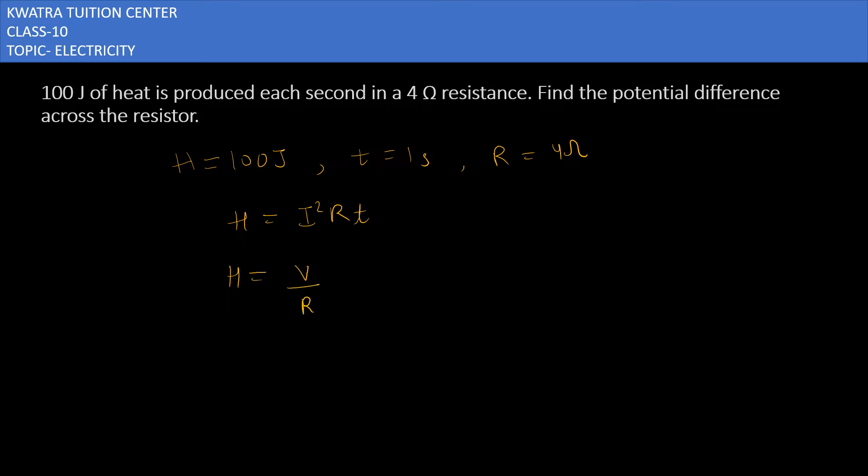I can substitute V's value. So it will give you V² over R² into R into t. So you can cancel R with R. Now you can substitute the values.